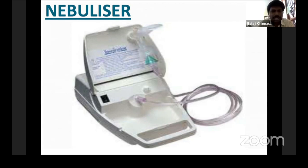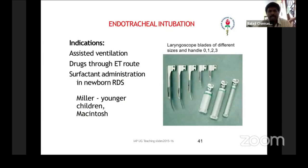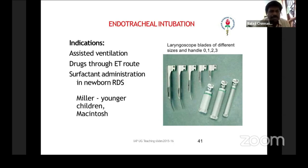Then comes endotracheal intubation. Once you give positive pressure ventilation and it needs to persist, it is better to intubate. For intubation, you need the laryngoscope. The laryngoscope is used for intubation and also you can give surfactant in newborns after intubation. You have different blades from size zero for neonates up to larger sizes for children more than ten years.